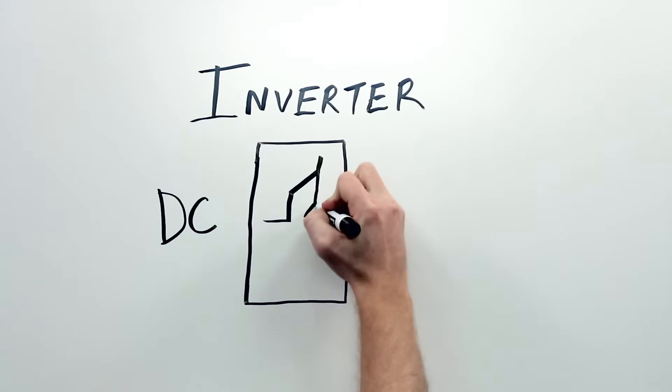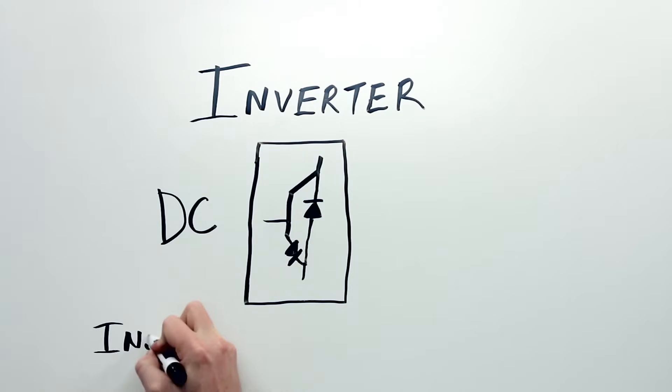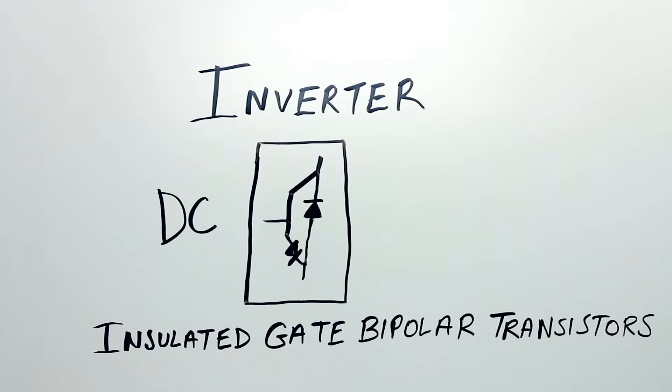Inside the inverter, there are small circuit board components called insulated gate bipolar transistors, which everyone calls IGBTs. The IGBTs act as little triggers that take the DC power and fire it out in short bursts. So the IGBTs spit out the DC in a short burst, then another, then another. Then they let out the DC a little longer, and then a little longer, and then a little shorter. Then they take the DC and flip the polarity. The DC is turned on and off, on and off, pow, pow, pow, pow.